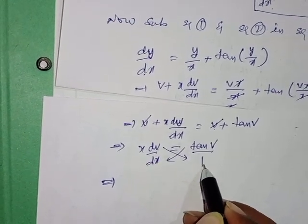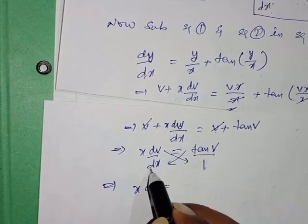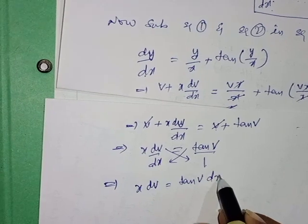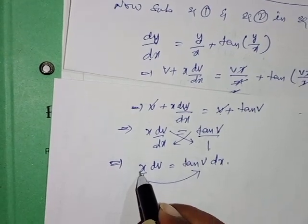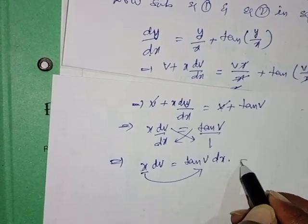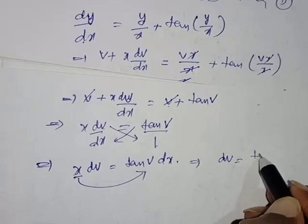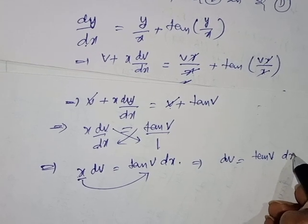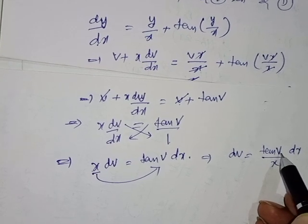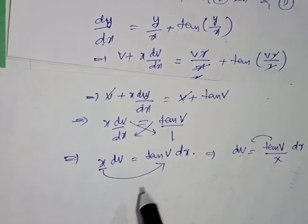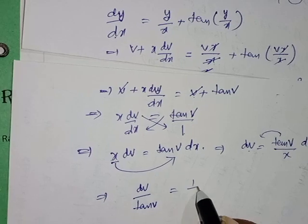Separating variables by cross multiplication: x·dv = tan(v)·dx. Transferring x to the other side (it moves to the denominator), we get dv/tan(v) = dx/x.